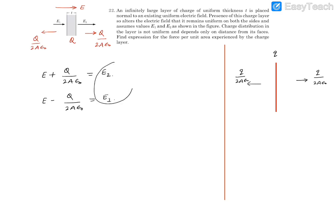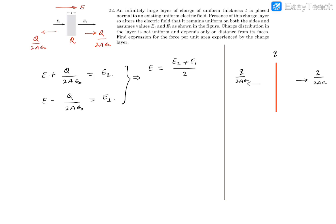We are given E1 and E2; E (external field) and Q are unknown. We can find both by solving these two equations. To find E, add the two equations: the Q/(2Aε₀) terms cancel, and we get E = (E2 + E1)/2.